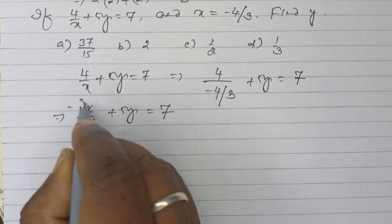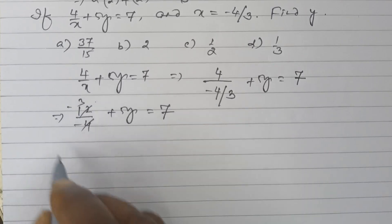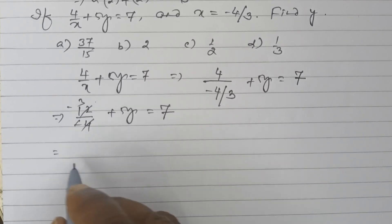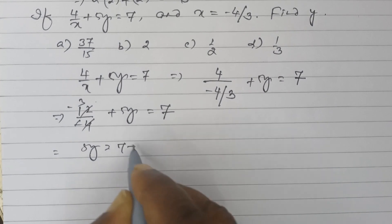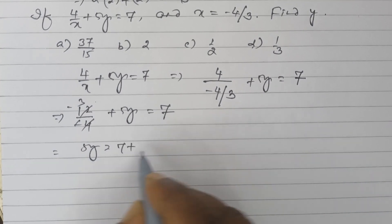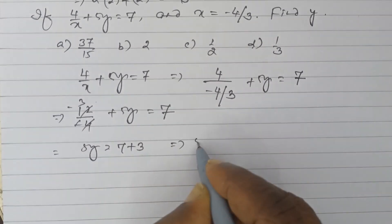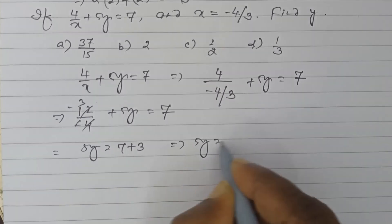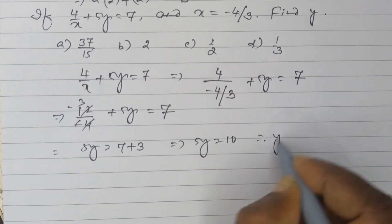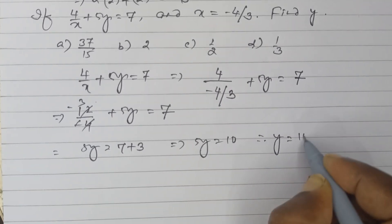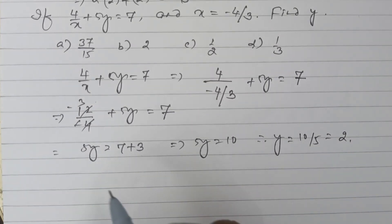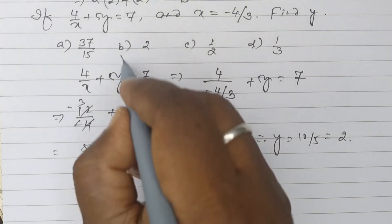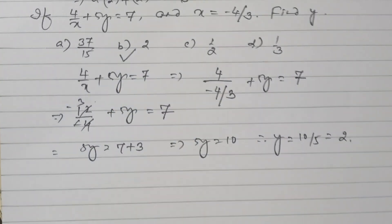Then minus 3 is here. So 5y is equal to 7 plus 3. 5y is equal to 10. Therefore y is equal to 10 by 5, that is 2. So y is equal to 2 — option B is the correct answer.